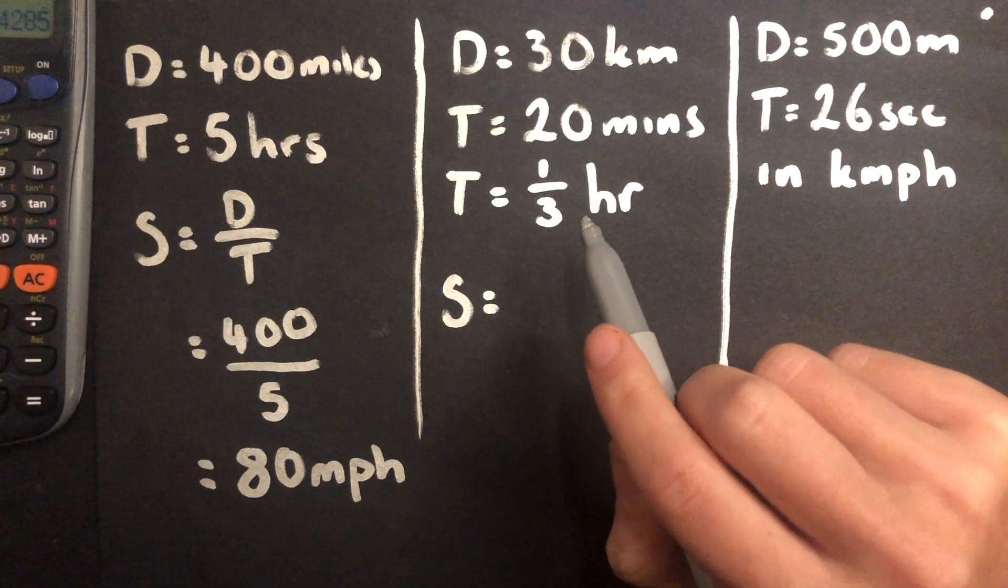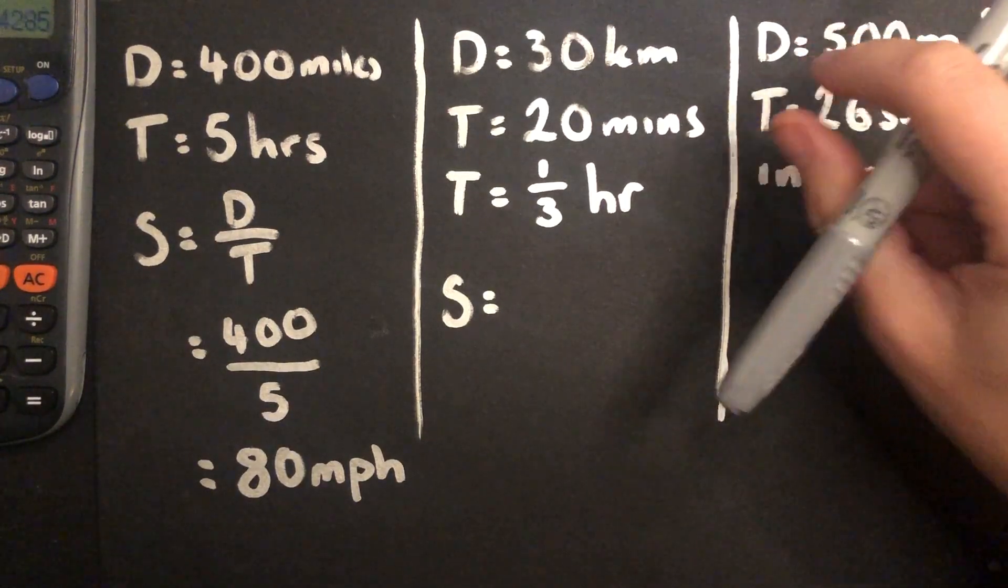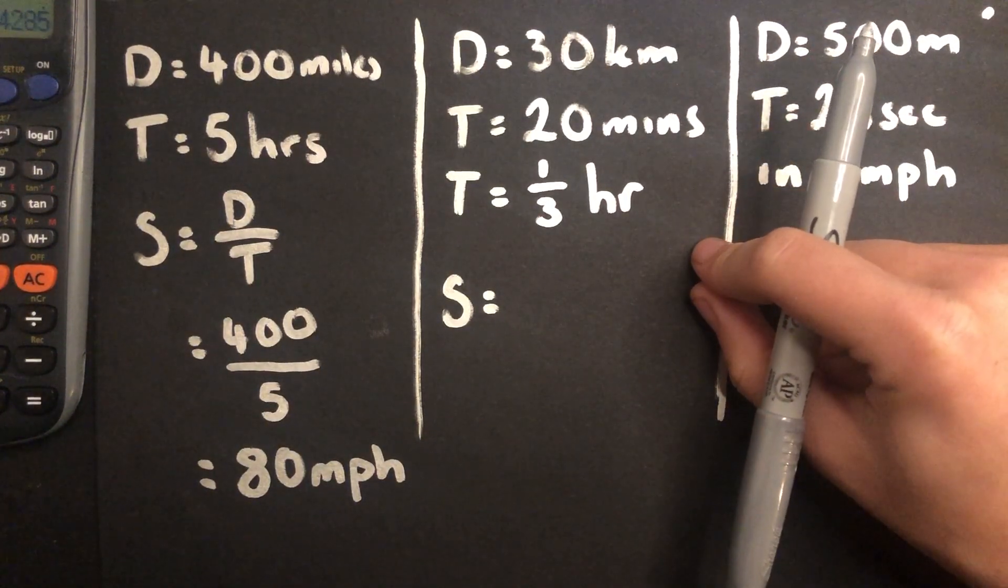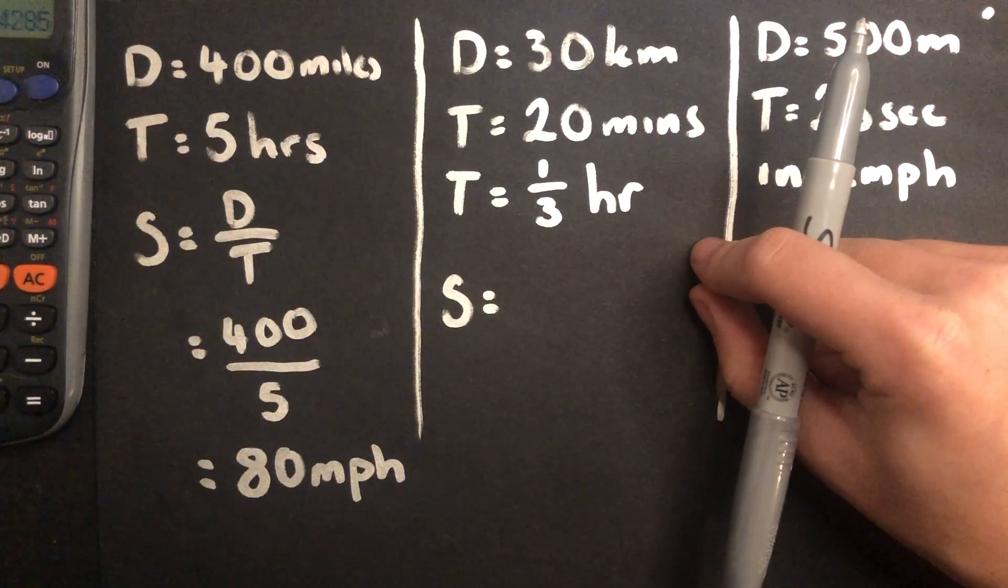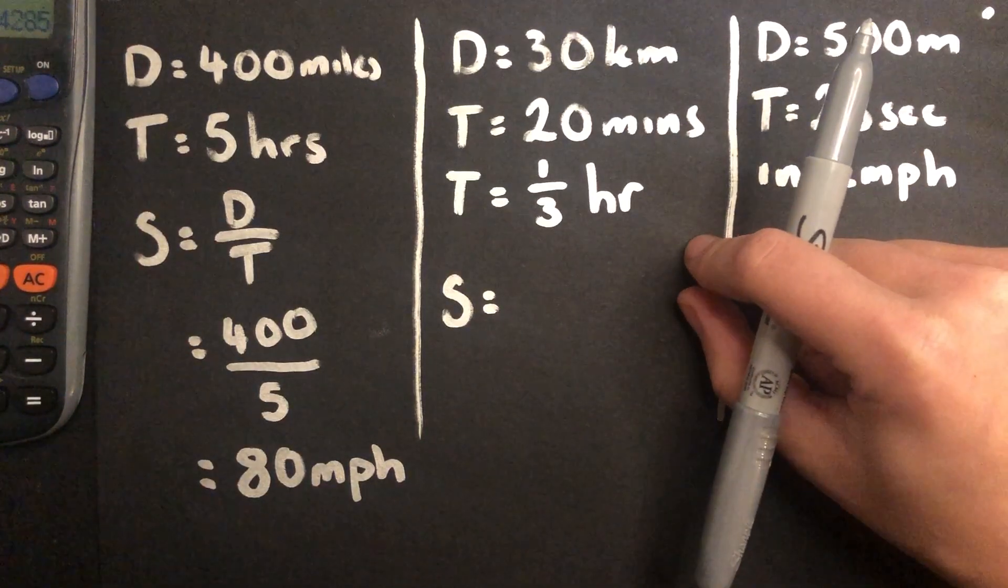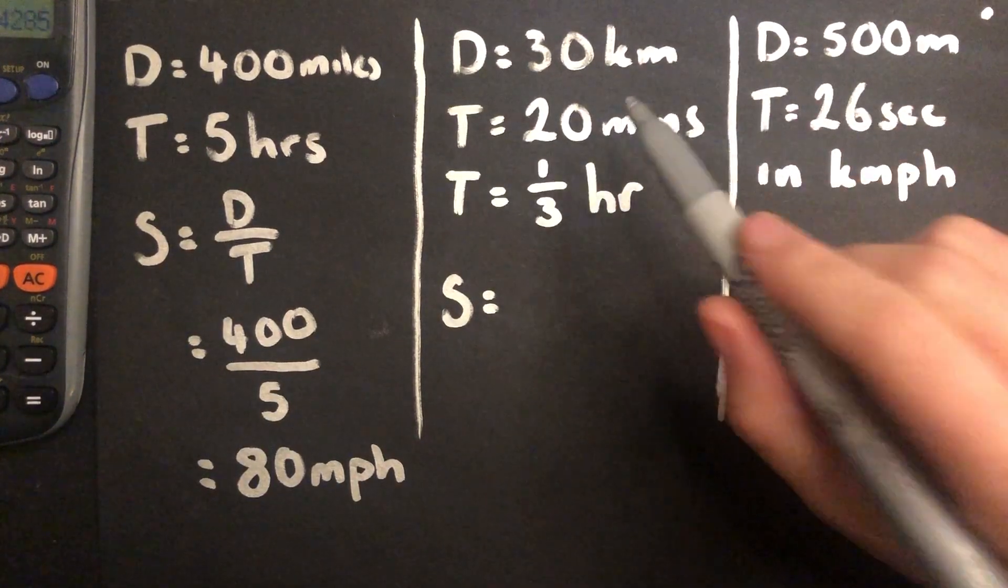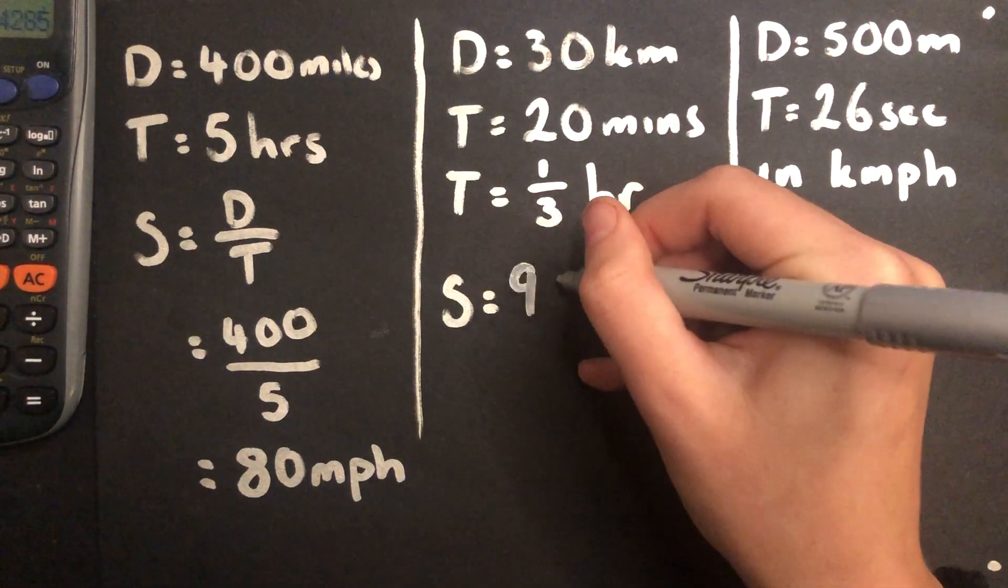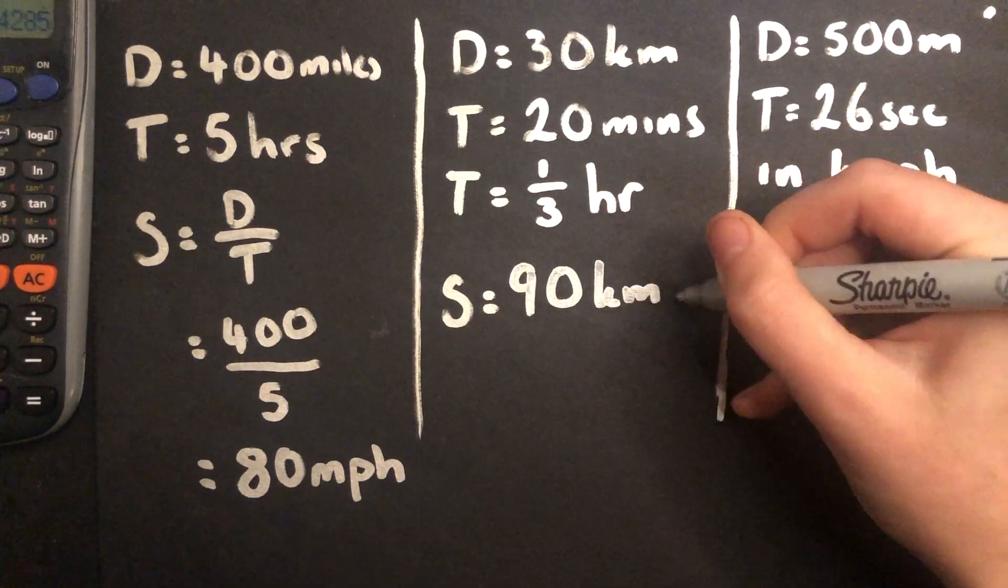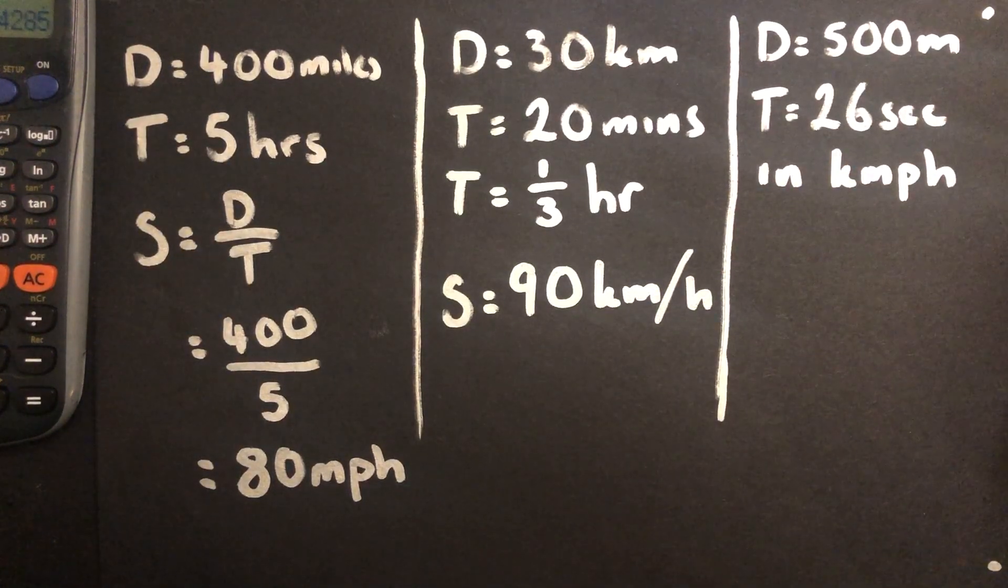So every 20 minutes, I am going another 30 kilometres. So you can probably think in your head, first of all, 20 minutes will be 30 kilometres. 40 minutes will be 60 kilometres. And then by the time I get to 60 minutes, I'll have done 90 kilometres. So that's going to be my answer. 90 kilometres per hour. Which I'll write like that. So 90 kilometres per hour.